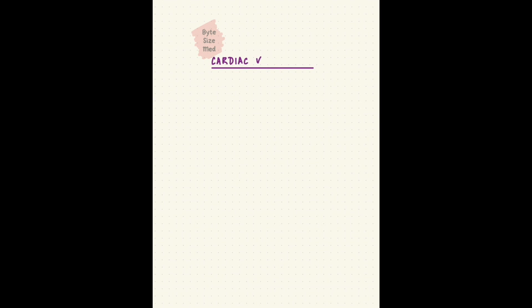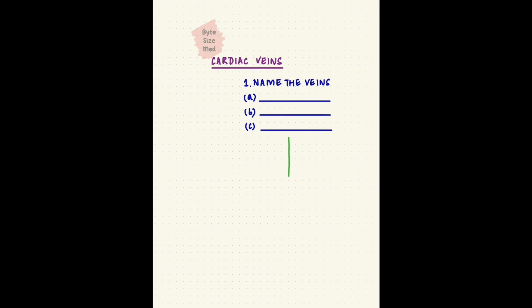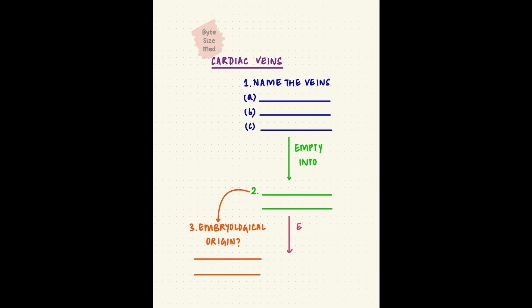Now we'll add a little anatomy to the embryology. The heart is supplied by arteries and drained by veins, just like other organs. Your task is to recall the names of the three main veins that drain blood from the walls of the heart. They empty into a structure — what's it called? What's that structure's embryological origin? And which chamber of the heart does it empty into? Pause the video here and take as much time as you need.